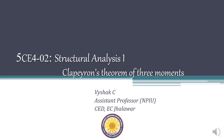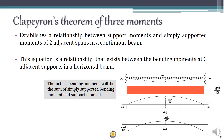Welcome back students. In this lecture we will discuss Clapeyron's theorem of three moments. This is an important method in analyzing indeterminate horizontal beams. It is basically an equation which establishes a relationship between the support moments and the simply supported moments of two adjacent spans in a continuous beam.